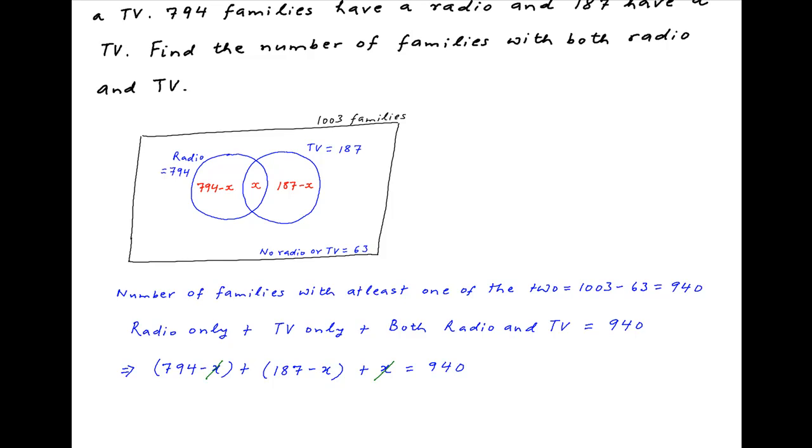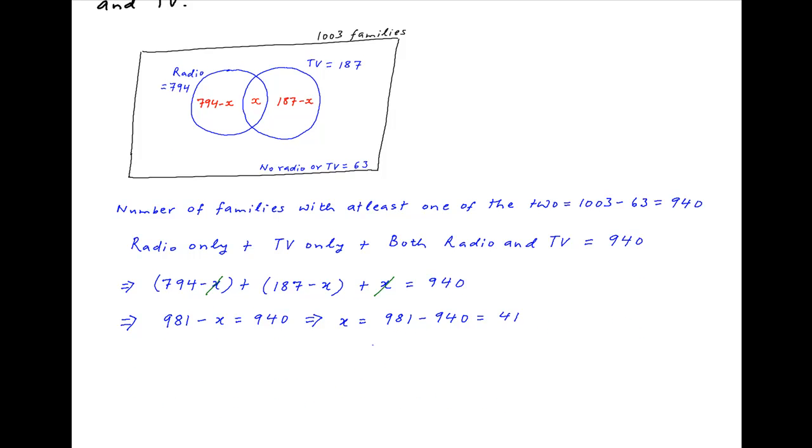One of the X's cancel on the left-hand side, and this expression simplifies to 981 minus X on the left-hand side, 940 on the right-hand side. Solving for X, we get 41 families own both a radio and a TV.